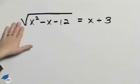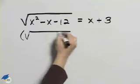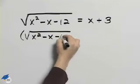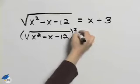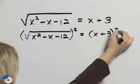To solve this equation we need to get rid of the radical and we'll do that by squaring both sides. So I'll have the square root of x squared minus x minus 12 all squared equal to x plus 3 squared.